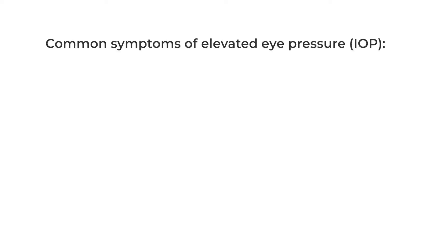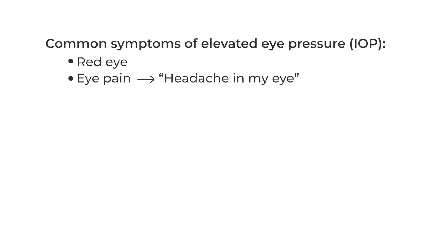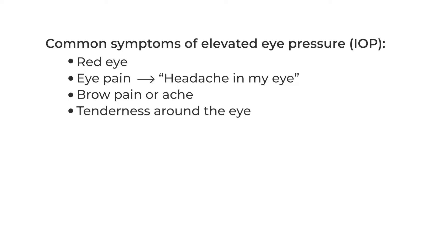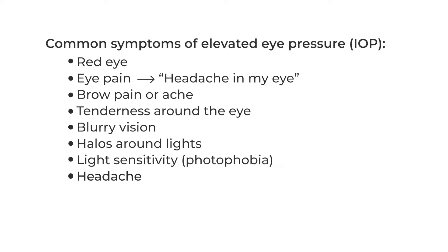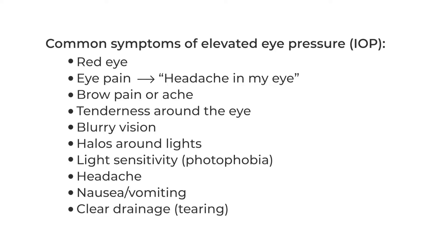There are some common generalities that can help when you're working up an eye patient. Common symptoms of an elevated eye pressure include a red eye, eye pain — some patients describe it as a headache in the eye — brow pain or ache, tenderness around the eye, blurry vision, halos around lights, light sensitivity, headache, nausea, vomiting, as well as clear drainage or tearing.